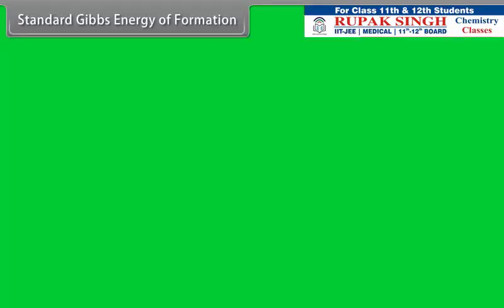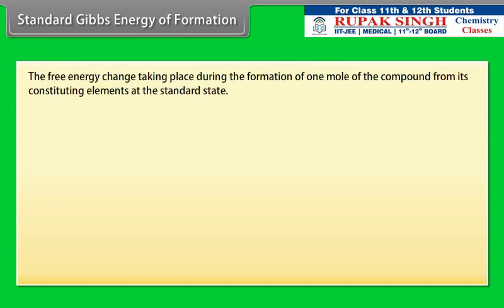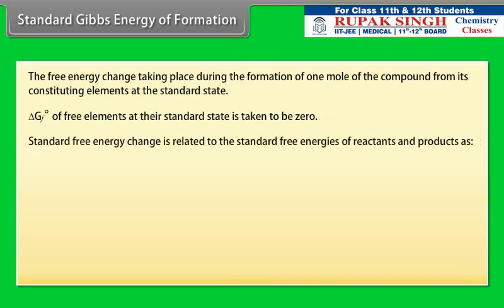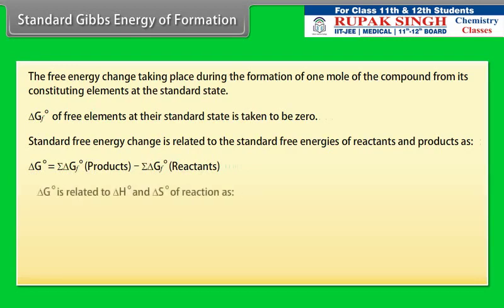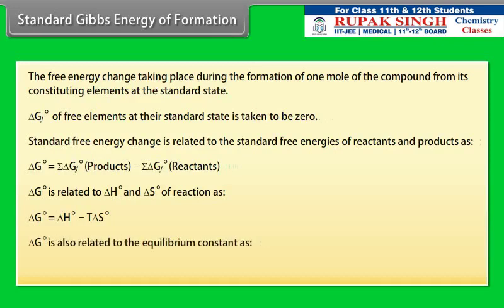Standard Gibbs energy of formation is the free energy change during the formation of one mole of a compound from its constituting elements at the standard state. ΔGf° of free elements at standard state is taken to be zero. Standard free energy change is given by: ΔG° = ΣΔGf°(products) − ΣΔGf°(reactants). ΔG° is related to ΔH° and ΔS° by: ΔG° = ΔH° − TΔS°. ΔG° is also related to the equilibrium constant by: ΔG° = −2.303 RT log K.